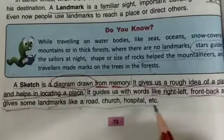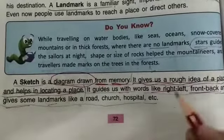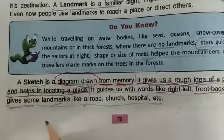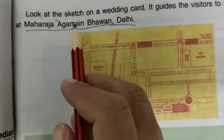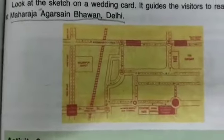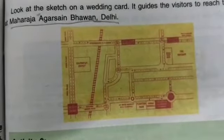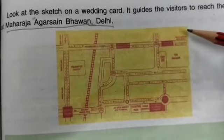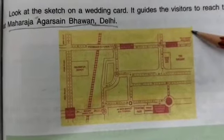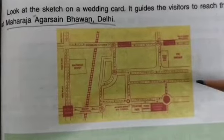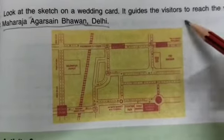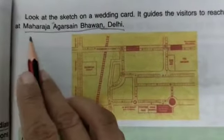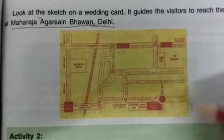Now look at the sketch on a wedding card. You have a sketch on the back side of a wedding card which tells you about the place where you are going. It guides the visitor to reach the venue - for example, Maharaja Agrasen Bhawan.